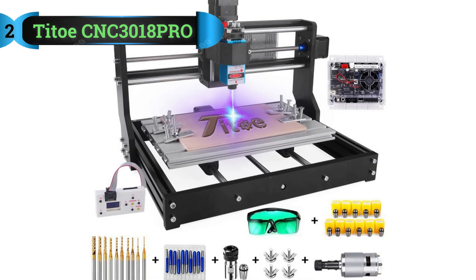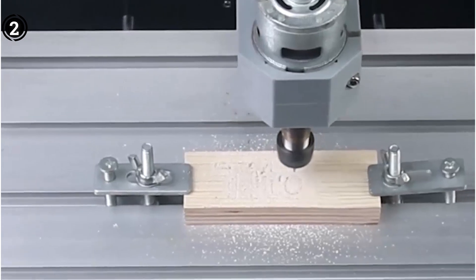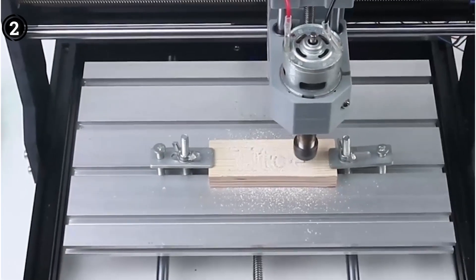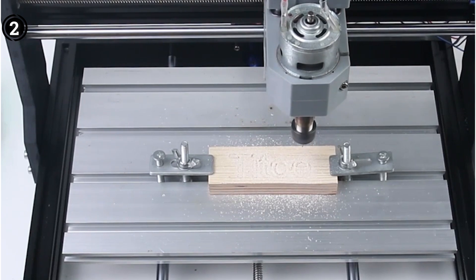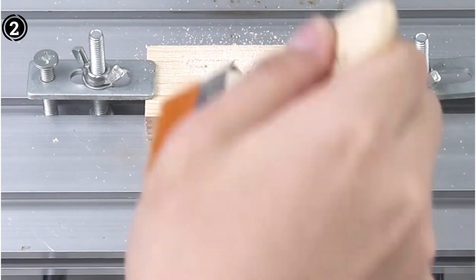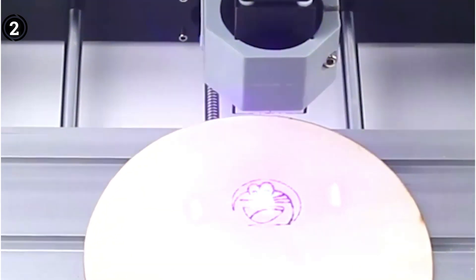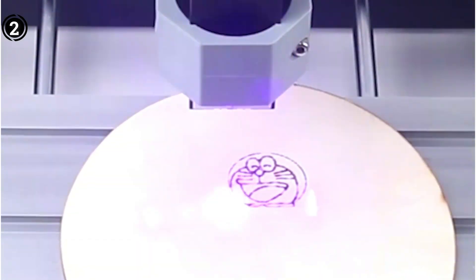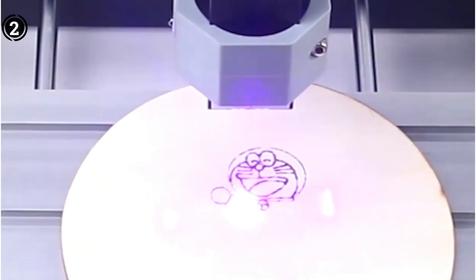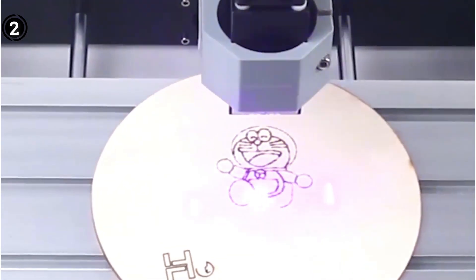List Number 2: Taito CNC 3018 Pro Machine. The Taito CNC 3018 Pro router stands out as one of the finest choices for novice users venturing into the realm of 3D CNC machines. Its array of features makes it a valuable investment for anyone looking to delve into CNC machining. This CNC machine represents an upgraded iteration with notable improvements including the incorporation of an integrated driver CIPM, a fixed heatsink, an external fan, and a robust casing.